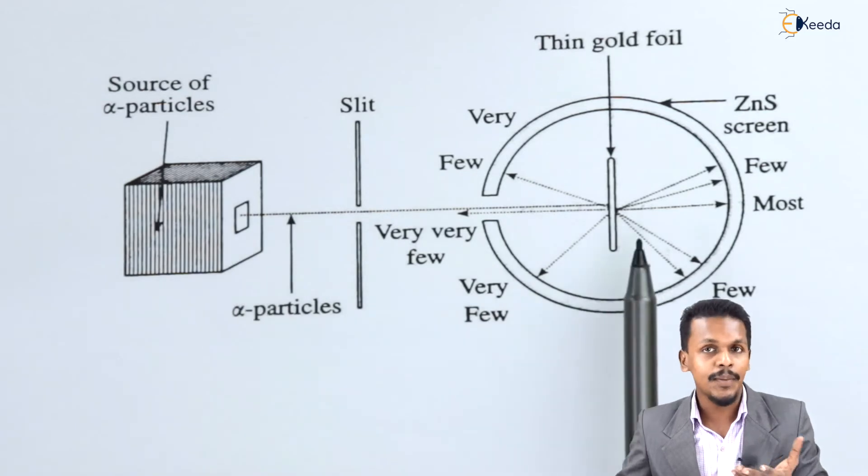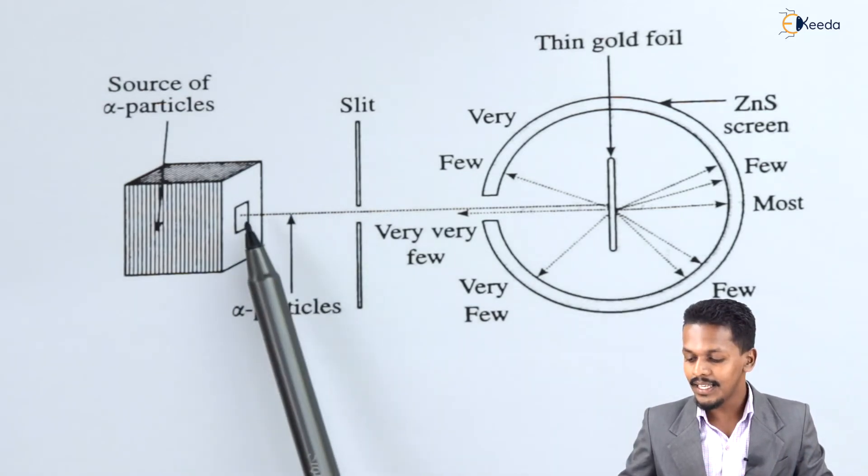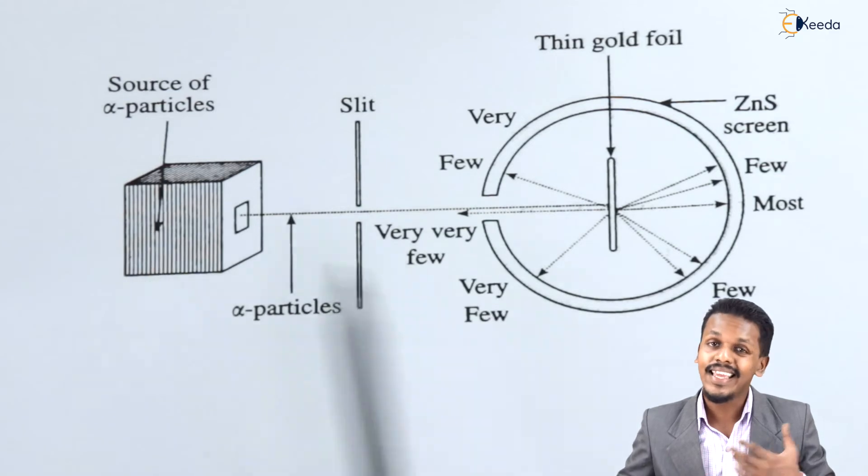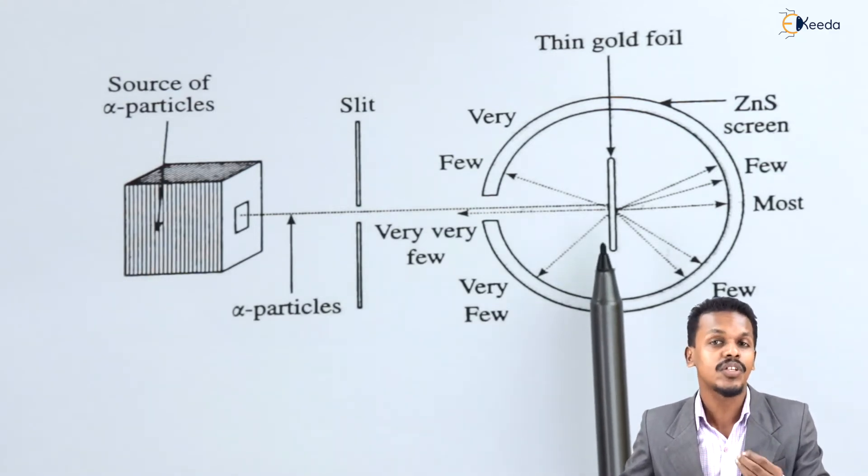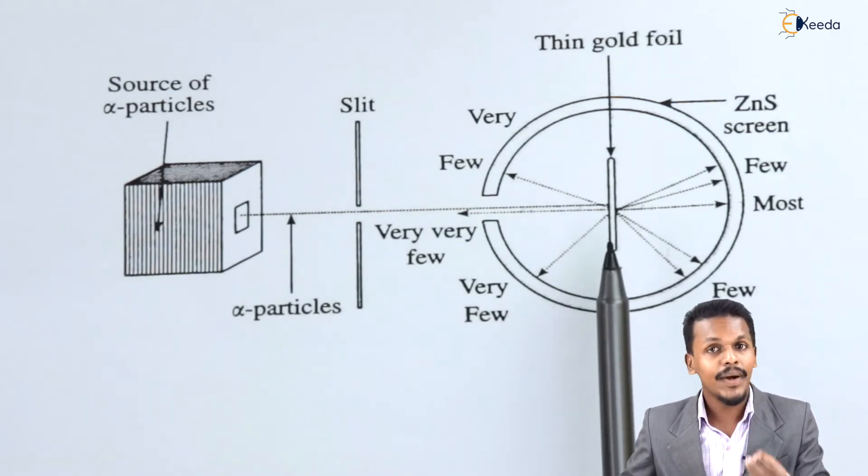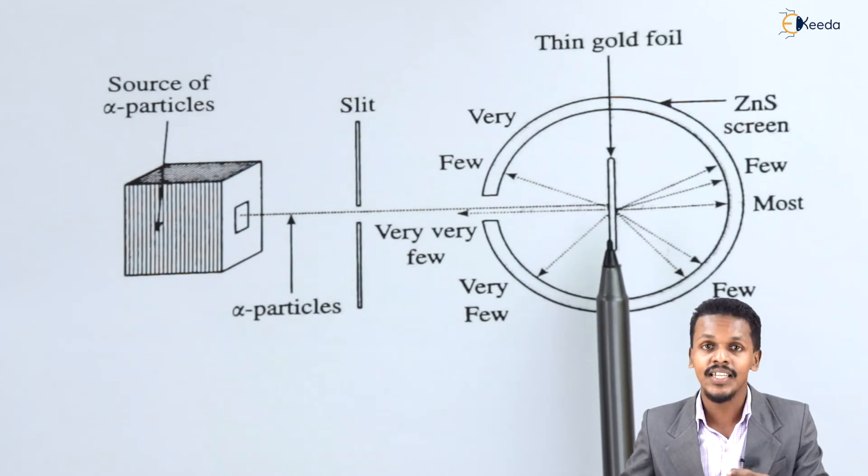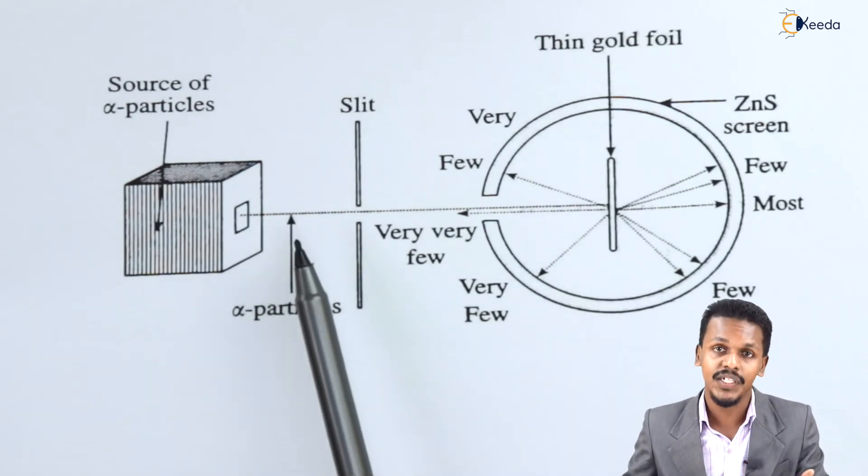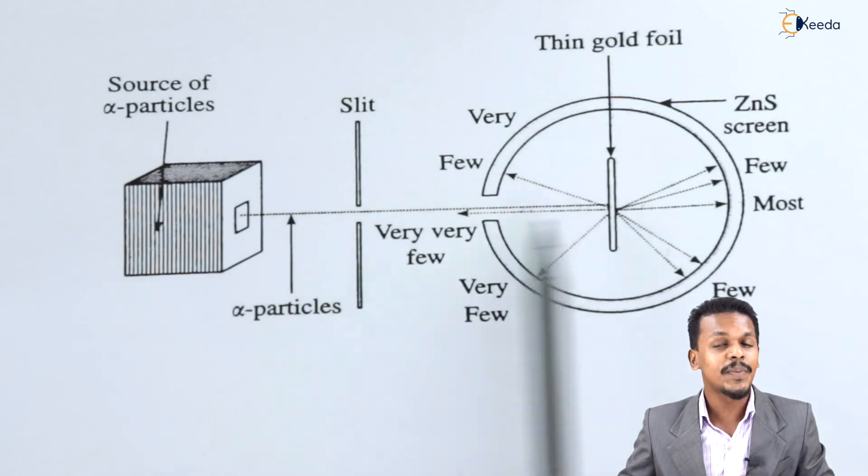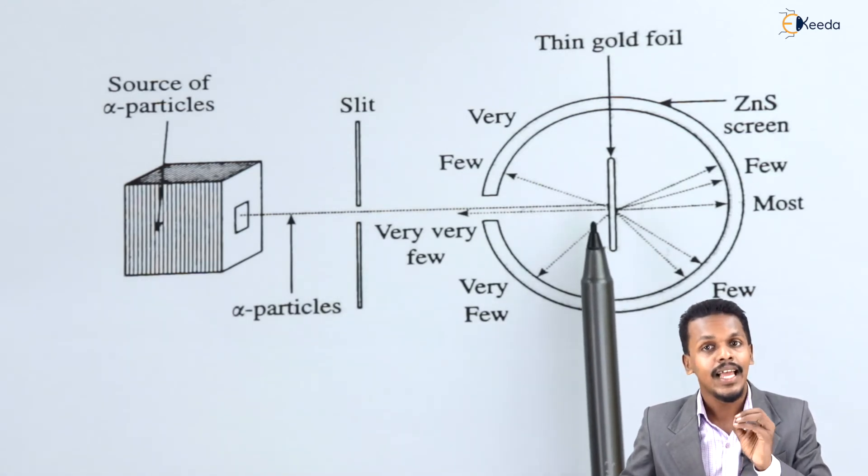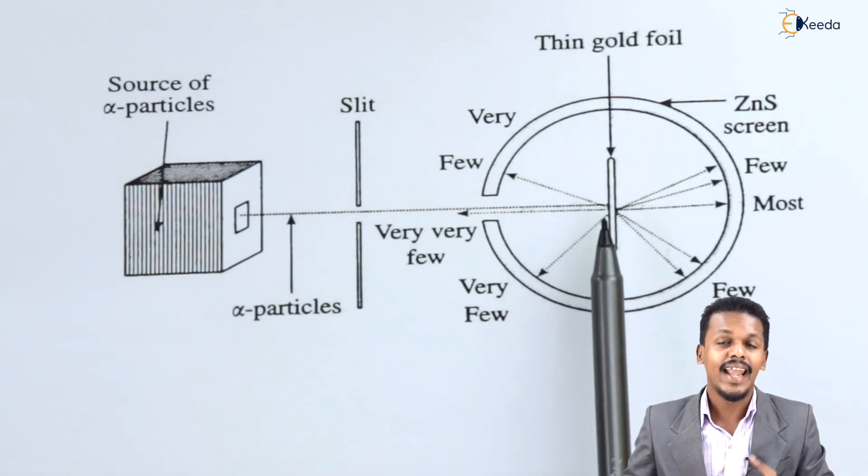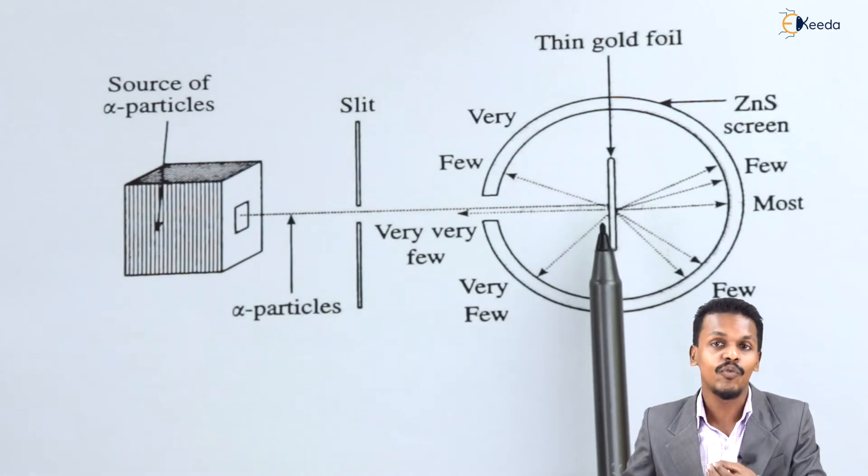But the most important thing is, whenever the alpha particle bounced back to 180 degrees, he concluded that there is a positively charged particle present in an atom. That's the reason when the alpha particle, which is itself a positively charged particle, will bounce back only when it collides with a positively charged particle. In that case, he concluded that it would be a nucleus.